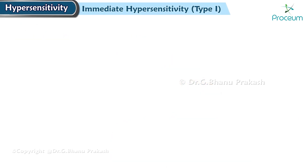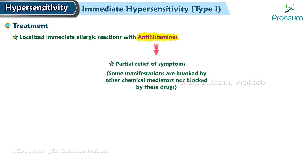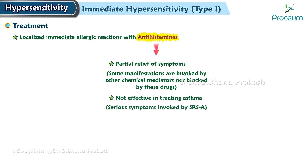Now we're going to talk about the treatment of immediate hypersensitivity. Treatment of localized immediate allergic reactions with antihistamines often offers only partial relief of the symptoms because some of the manifestations are invoked by other chemical mediators not blocked by these drugs. For example, antihistamines are not particularly effective in treating asthma, the most serious symptoms of which are invoked by SRSA.